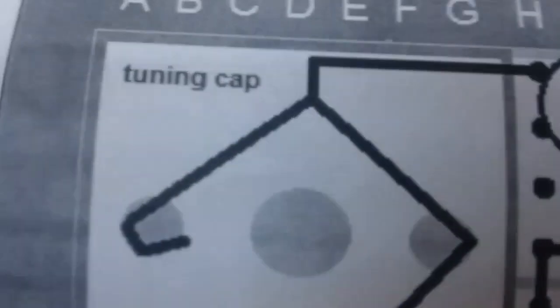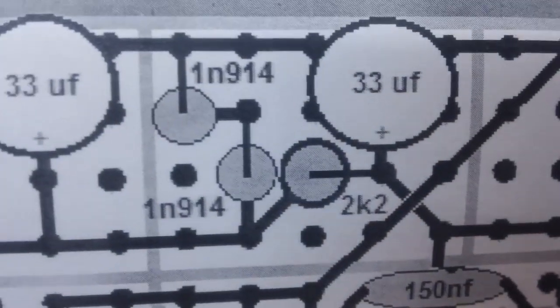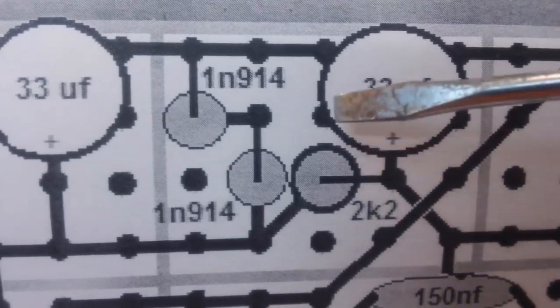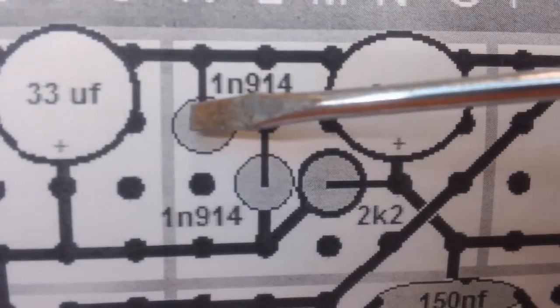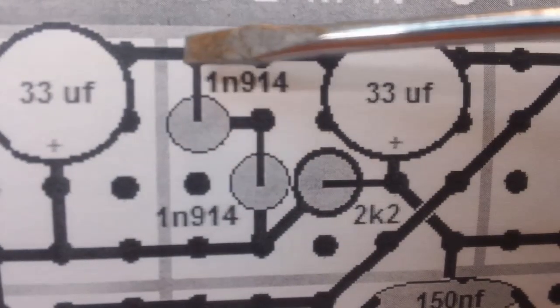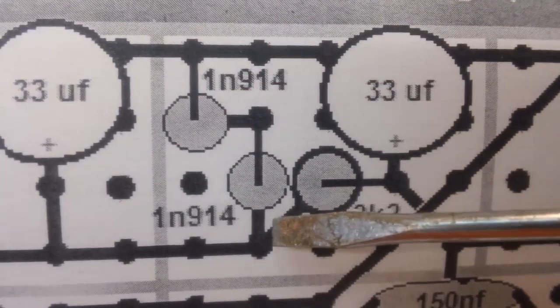I'll show you what that is right here. I have the 33's in, both of those are in. The diodes are in just the way they are supposed to be with cathodes going towards the ground on both of them.